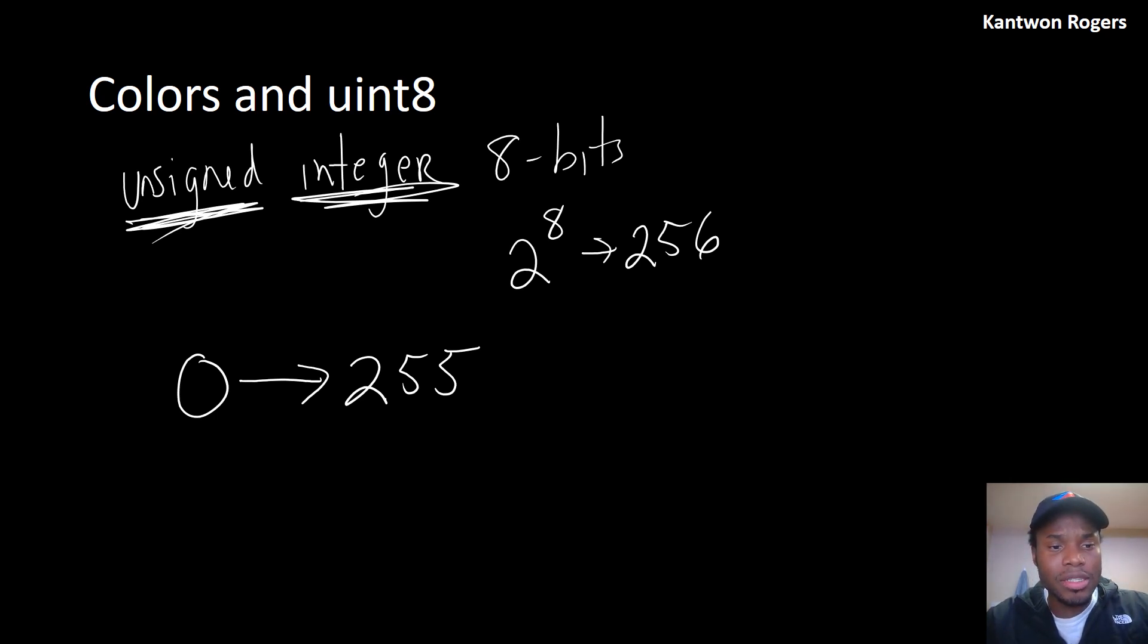The question here is, we have some numbers in this three-dimensional array, this image, but how in the world are colors showing up? How does MATLAB interpret these colors?